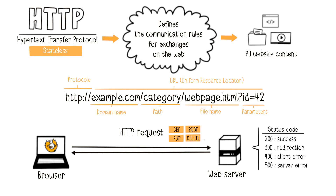These are known as status codes. The most well-known error code is 404 Not Found, indicating that the resource URL couldn't be found — either the requested file hasn't been published, is misspelled, or is located in the wrong directory.